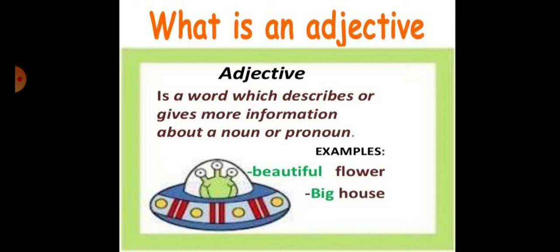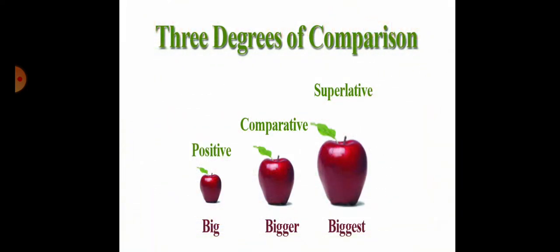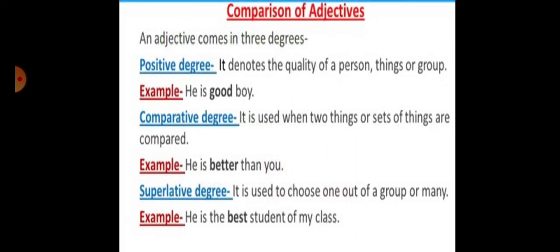We explain our nouns through different levels, and these are three levels named as positive, comparative, and superlative. You can see big, bigger, and biggest. These are the three levels of explaining nouns and pronouns.